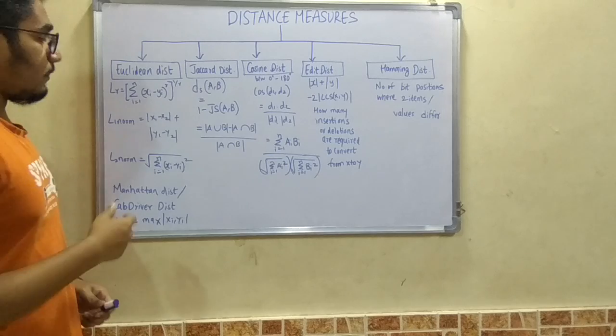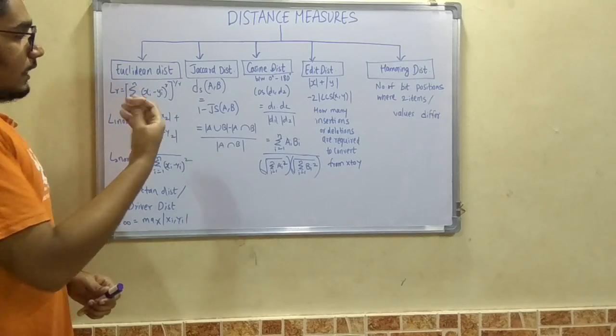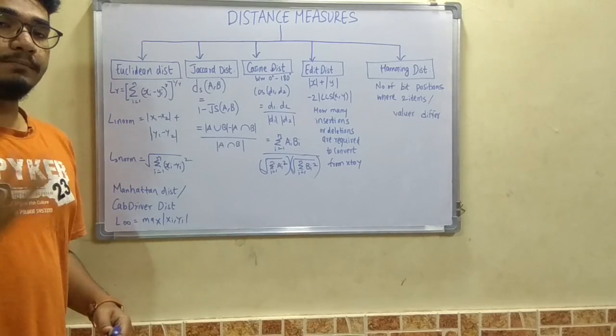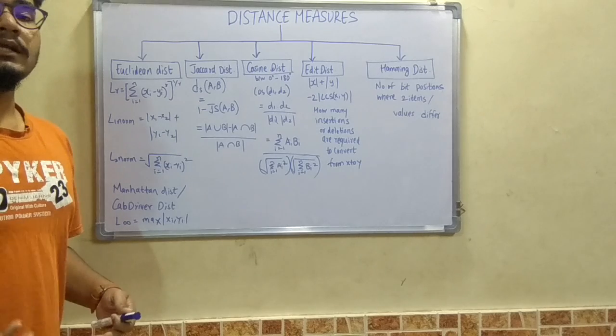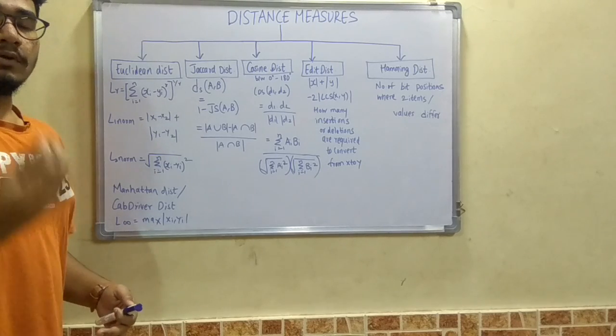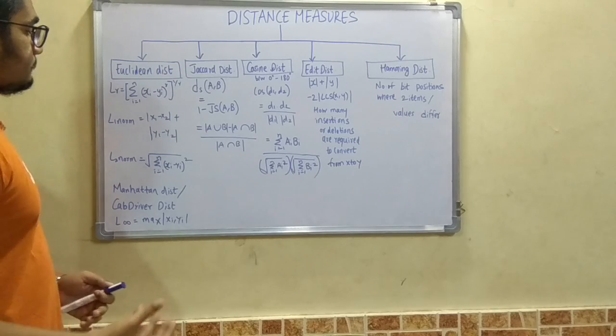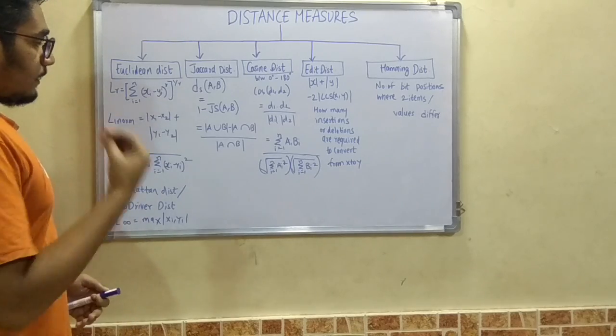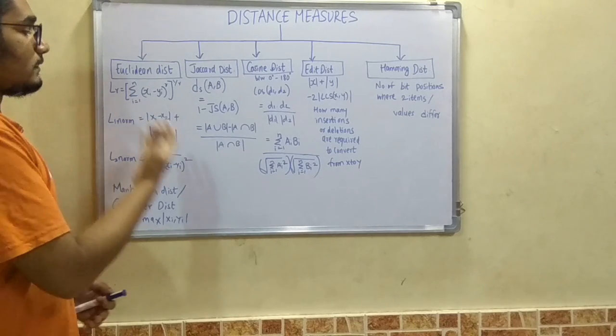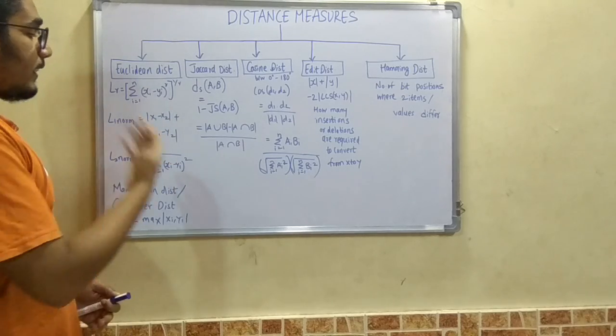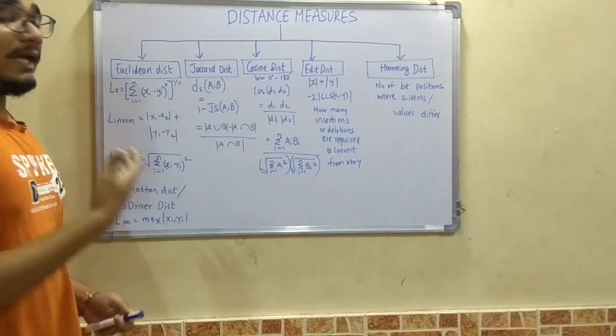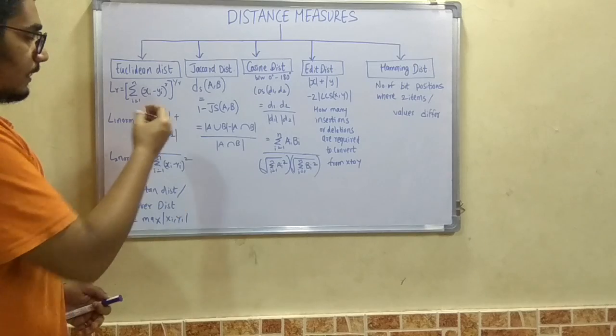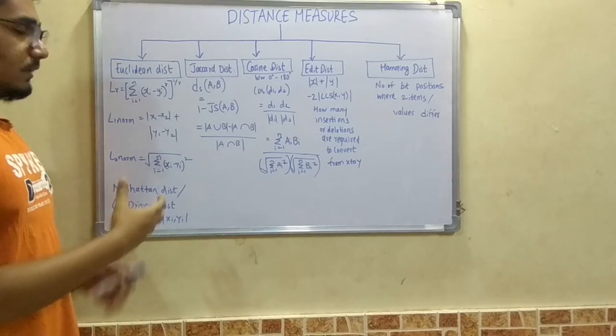These two norms, the L1 norm and L2 norm, are based upon this generalized formula. By changing various parameters, we can get new forms of formulas to use in subsequent problems for solving different scenarios. Talking about the L1 norm, we have mod of (x1 minus x2) plus mod of (y1 minus y2).